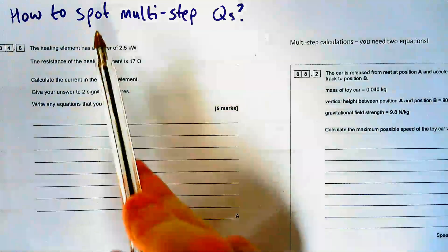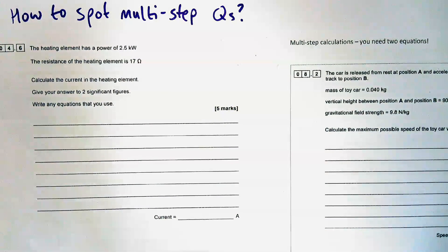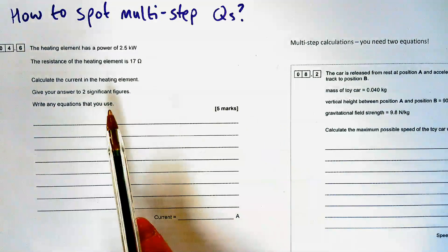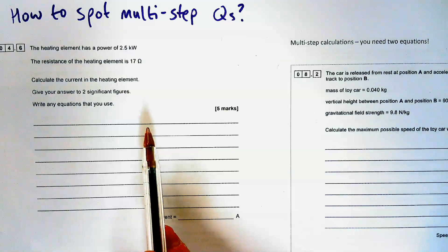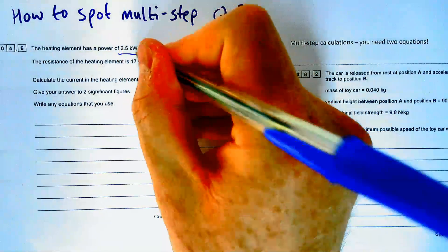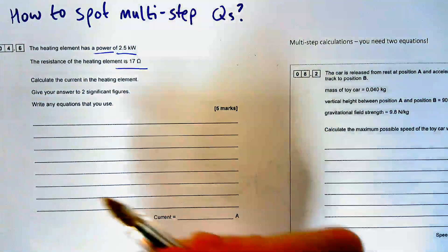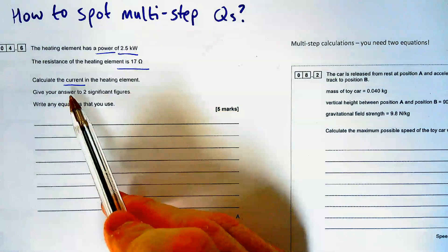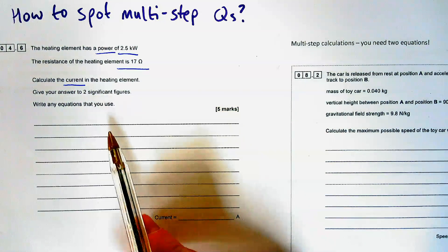Something important to note about multi-step equations is how we can spot them. In your paper, if you're higher tier separate science or combined science, you will have a multi-step equation. My first example is one that isn't a multi-step equation. We've got power and we've got resistance, and the question is asking us to find current — that's only two things given with a third to find out, so it's going to take us one equation.